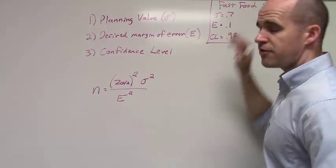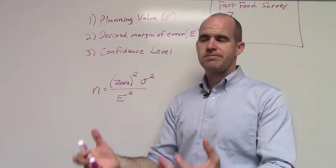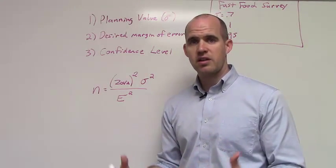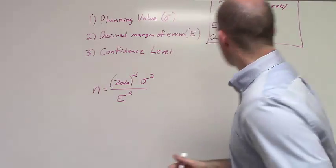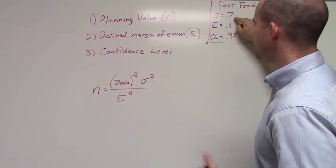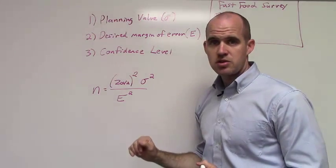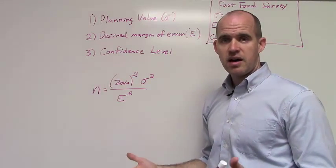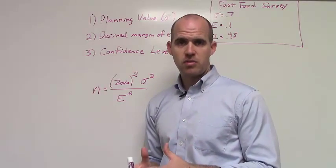Let's imagine that I'm a fast food company and I'm doing a survey and I want to get some kind of an idea about how frequently people come to our restaurant or how they feel about us or something of that nature. But, specifically, I know that I have a planning value that the population standard deviation is 0.7. I have a desired margin of error of 0.1. So I want it to be within one-tenth from an accuracy standpoint. I want very little margin of error.